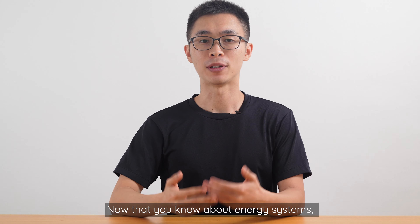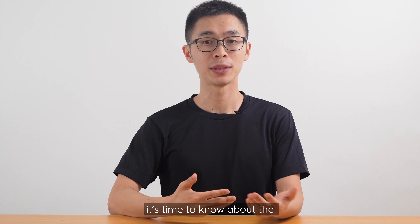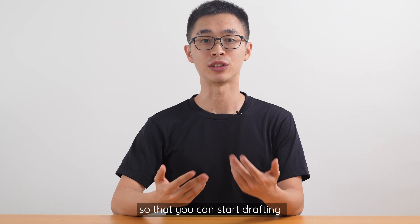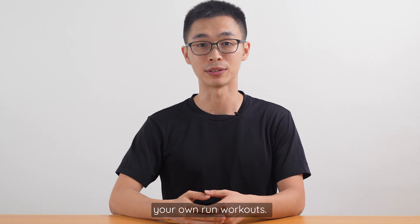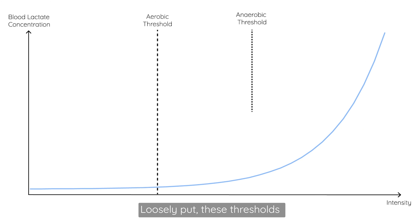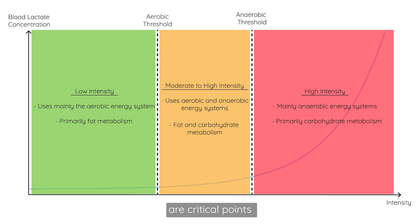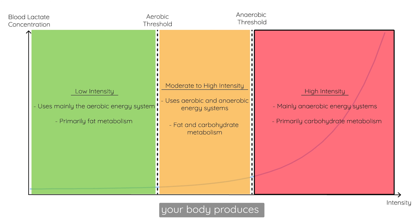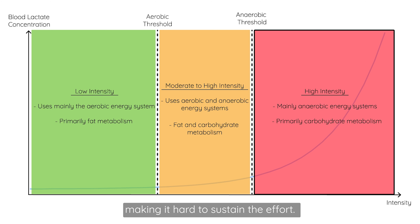Now that you know about energy systems, it's time to understand the aerobic and anaerobic thresholds, so that you can start drafting your own run workouts. Loosely put, these thresholds are critical points for your body's energy systems. Beyond the aerobic threshold, you start utilizing your anaerobic system, and beyond the anaerobic threshold, your body produces lactic acid faster than it can be cleared, making it hard to sustain the effort.